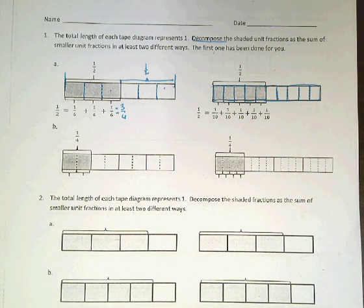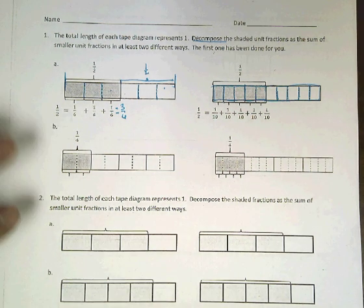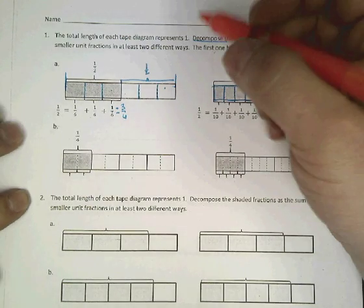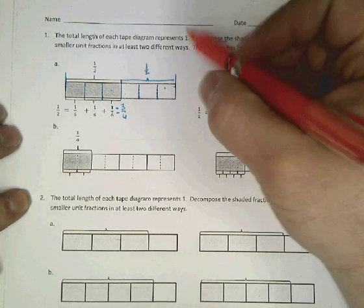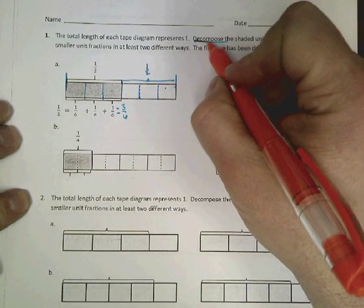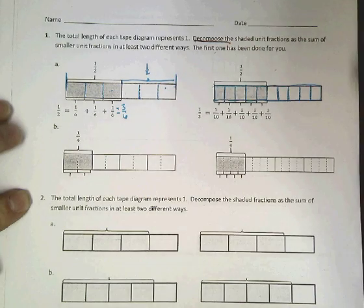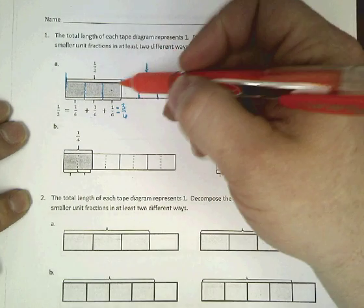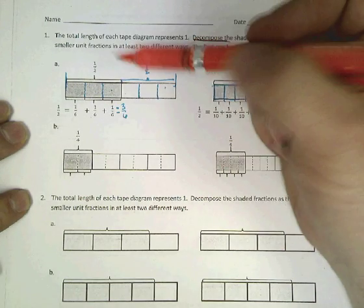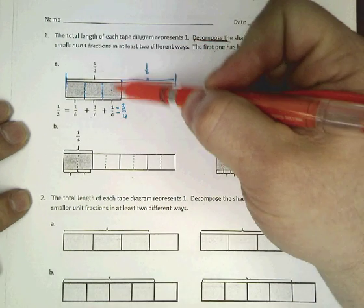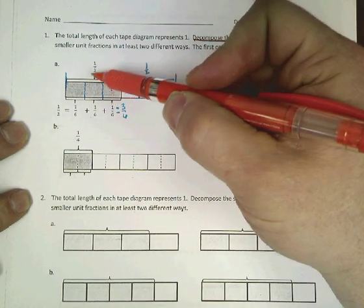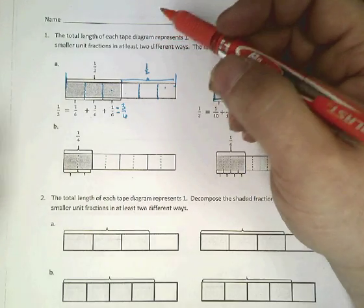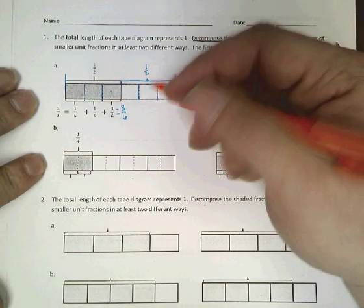Good afternoon. We have our homework today for decomposing fractions with diagrams — tape diagrams. It says right here we're going to decompose the shaded area. What we're doing is just taking the fraction that we have and breaking it down further, trying to see what parts make up this part. It's just parts of parts of parts, and we just keep going further into it.